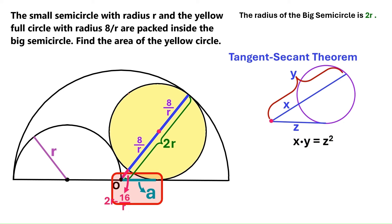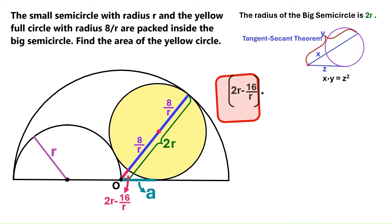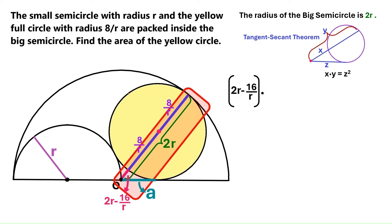Now, this segment is a tangent to the yellow circle. And this segment is a secant. And their common point of origin is this point O. So we can apply the tangent-secant theorem here. This pink distance is the x in the theorem. So let's bring it up here like this. And this 2r is the distance y.